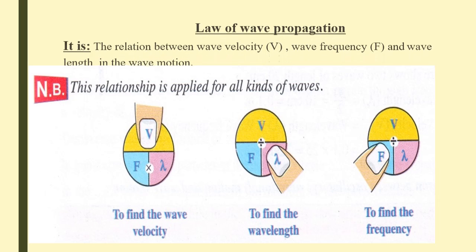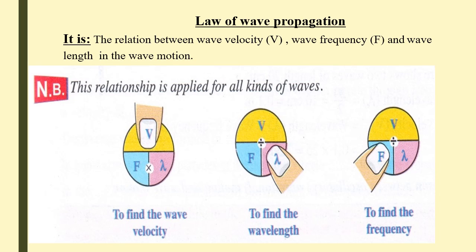The law of wave propagation describes the relationship between velocity, frequency, and wavelength: v = f × λ. If we need wavelength: λ = v ÷ f. If we need frequency: f = v ÷ λ.